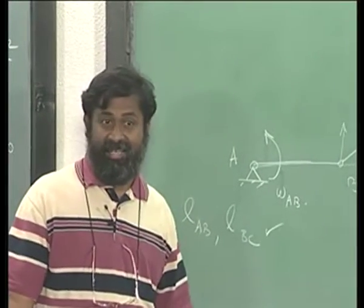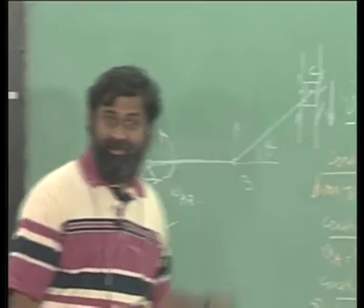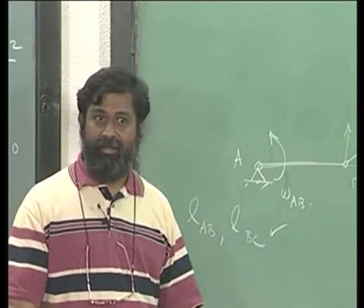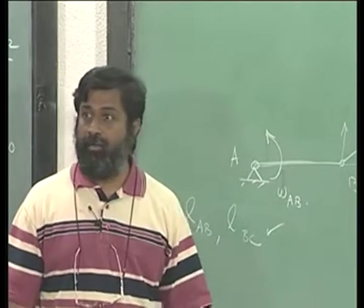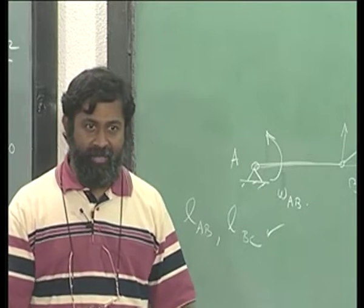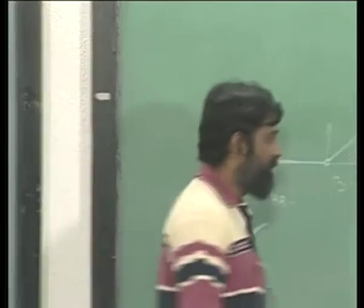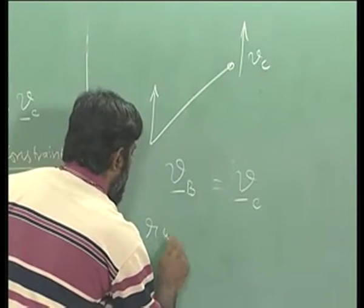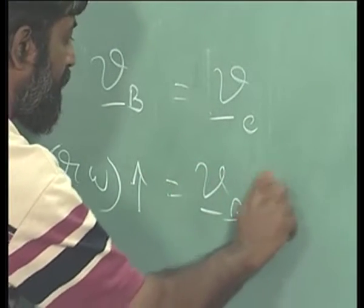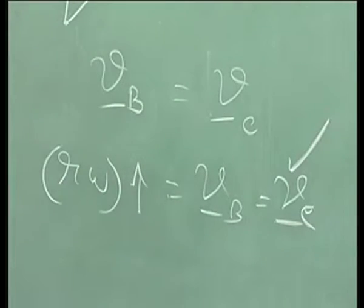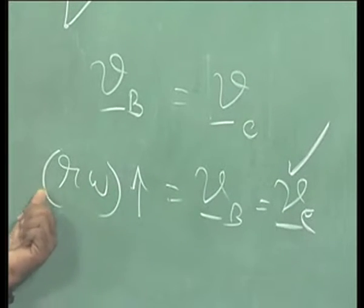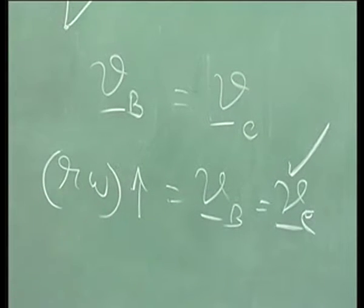Now it's very simple. Vb is given to you, how do I find out omega AB? That's very simple. Omega cross RAB is omega AB and problem is solved immediately because R omega times this direction is equal to Vb is equal to Vc. Is this given? The answer is yes. So R omega is given, R is known, omega can be found out.